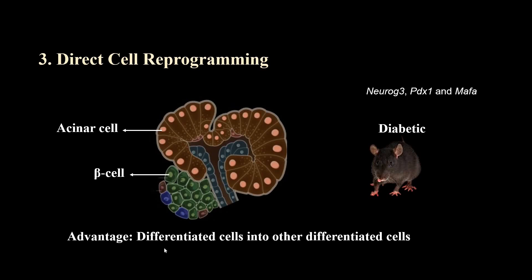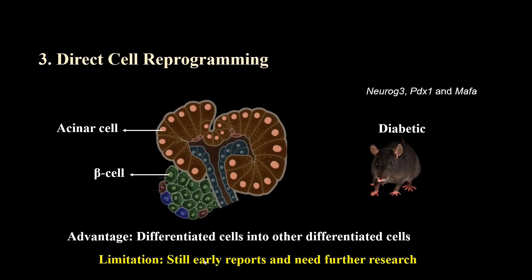This is the direct cell reprogramming method, which means one differentiated cell is reprogrammed into another type of differentiated cell without any intermediate stem cell stage. It is also important to mention that the adenoviruses used in this experiment did not become a permanent part of the mice's bodies. These are still initial reports and many laboratories are currently working on direct cell reprogramming methods. We hope that in the future we will be able to use these advanced approaches to treat various kinds of chronic diseases. Thank you.